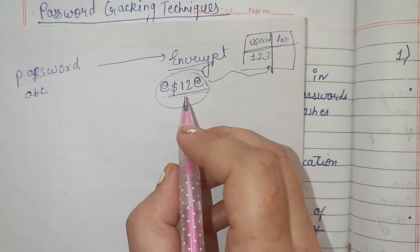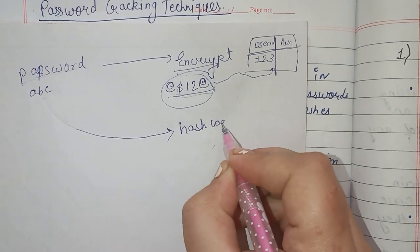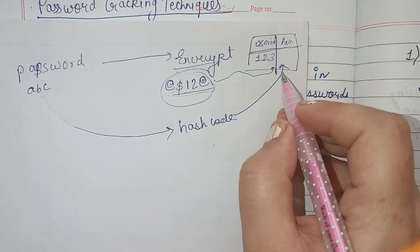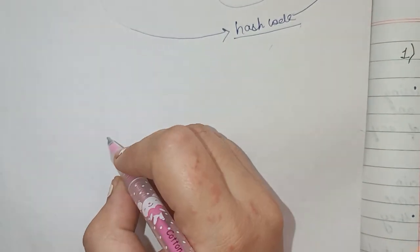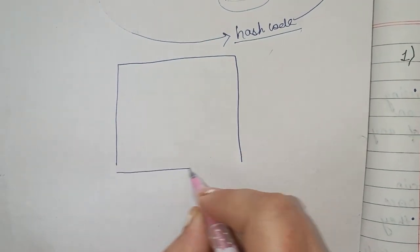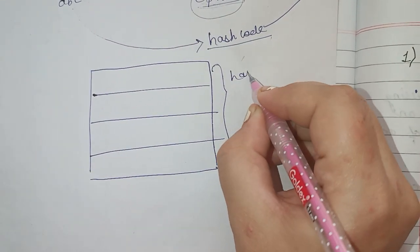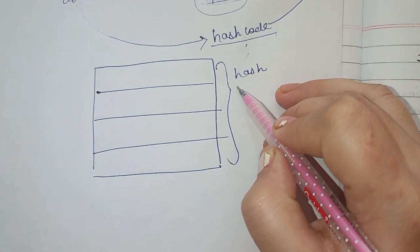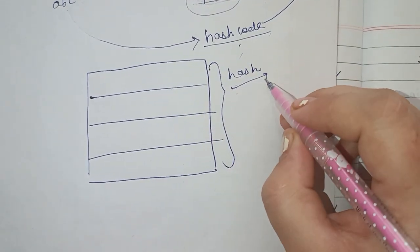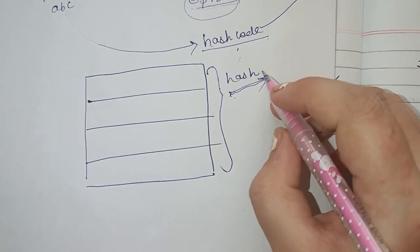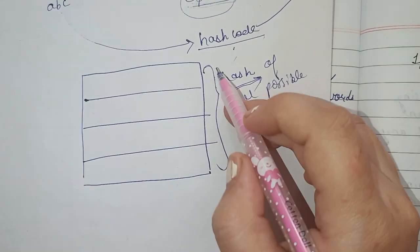Generally, hashing techniques are used for encryption. This means that 'ABC' is encrypted by a hash code, and the hash code is stored in the server. Now, what is a hash? Hash is an unreadable format, and for each word, a hash is unique. It is called a hash of all possible words, and this collection of hashes is called a rainbow table.